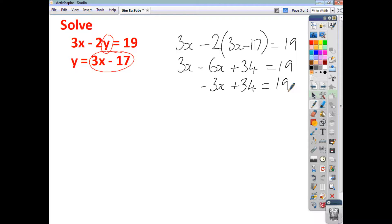So that leaves me with negative 3x plus 34 equals 19. Now, what do I need to do? I need to take 34 away from both sides. So that leaves me with negative 3x being equal to negative 15. And if I multiply both sides by negative 1, that gives me positive 3x is positive 15. So x must be just 5.